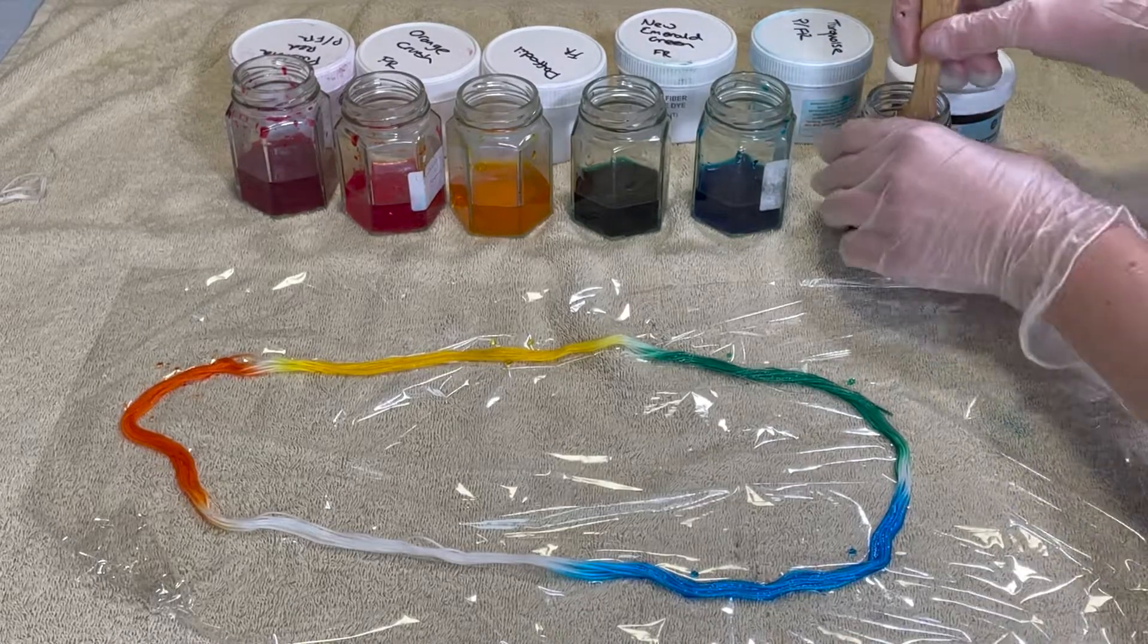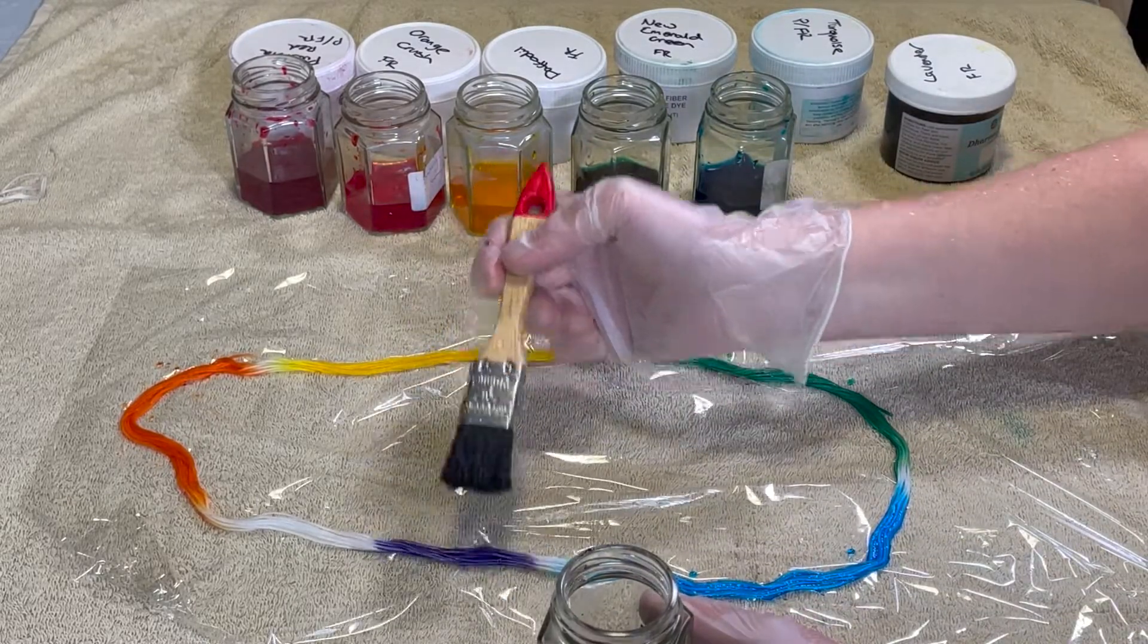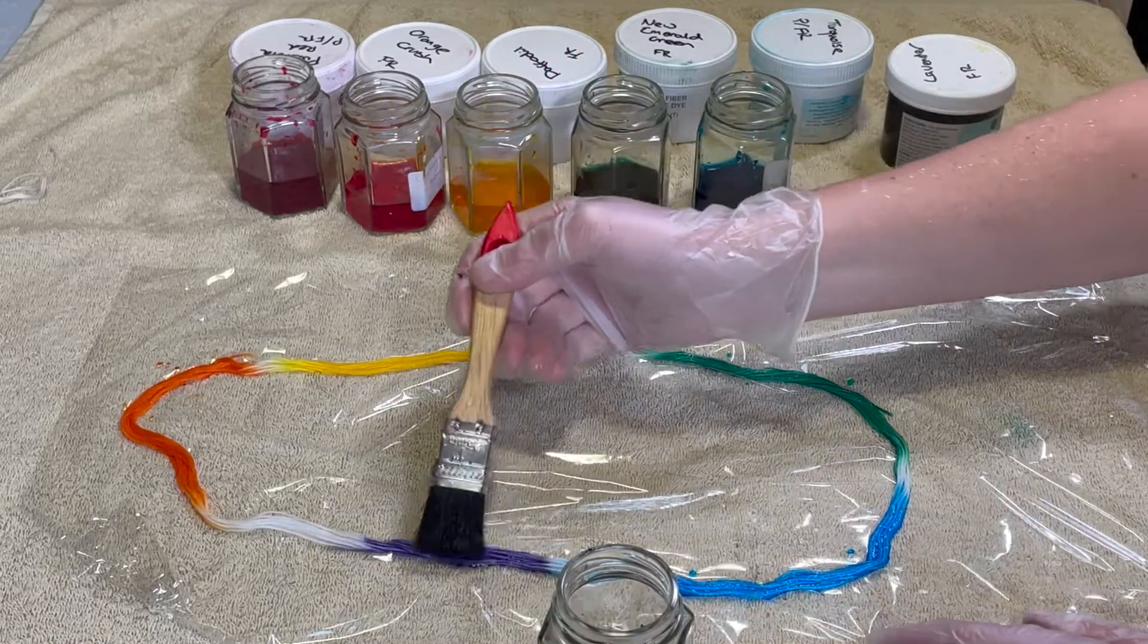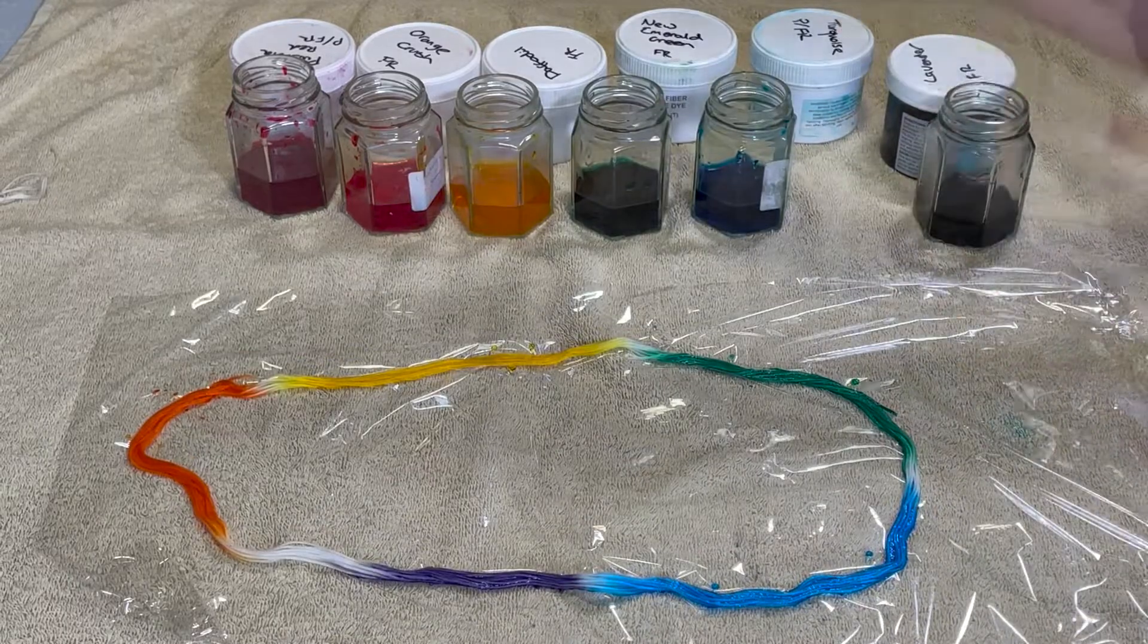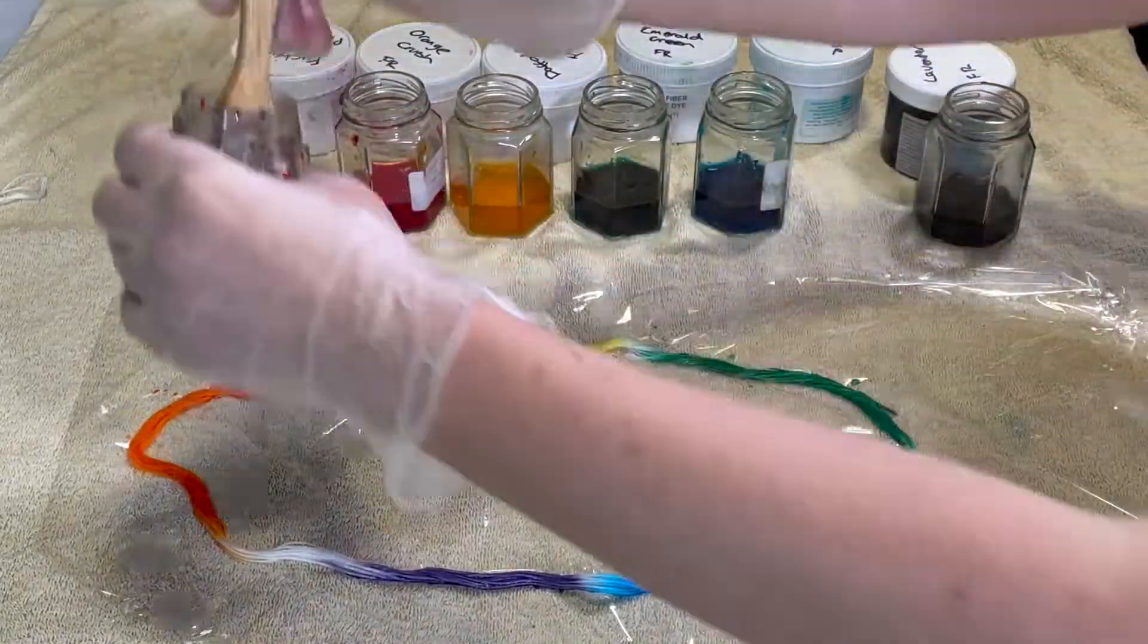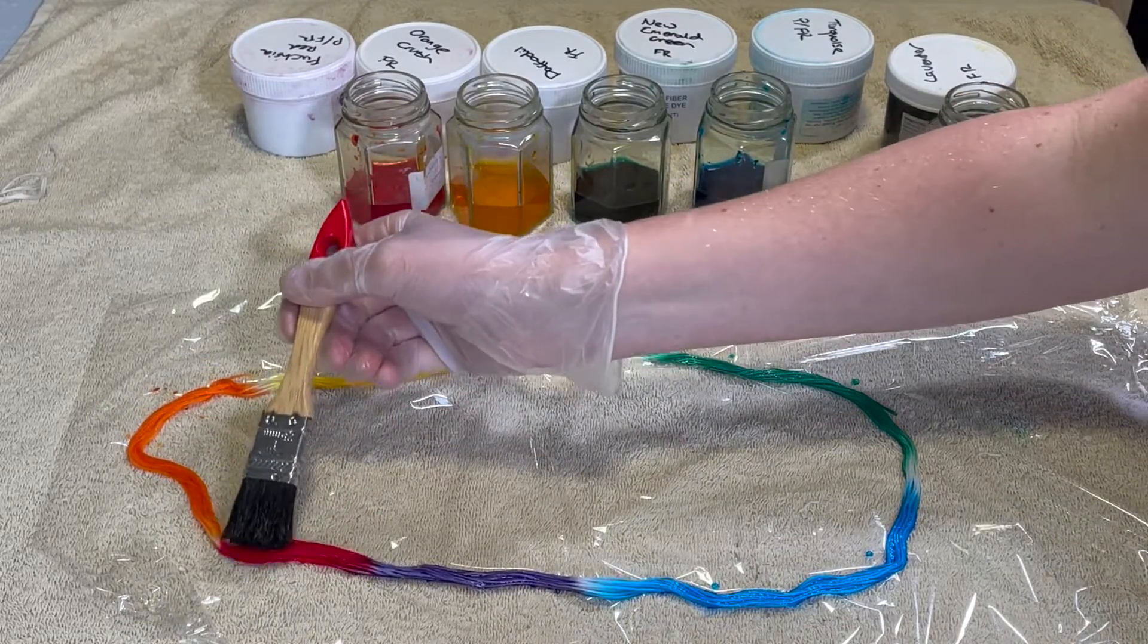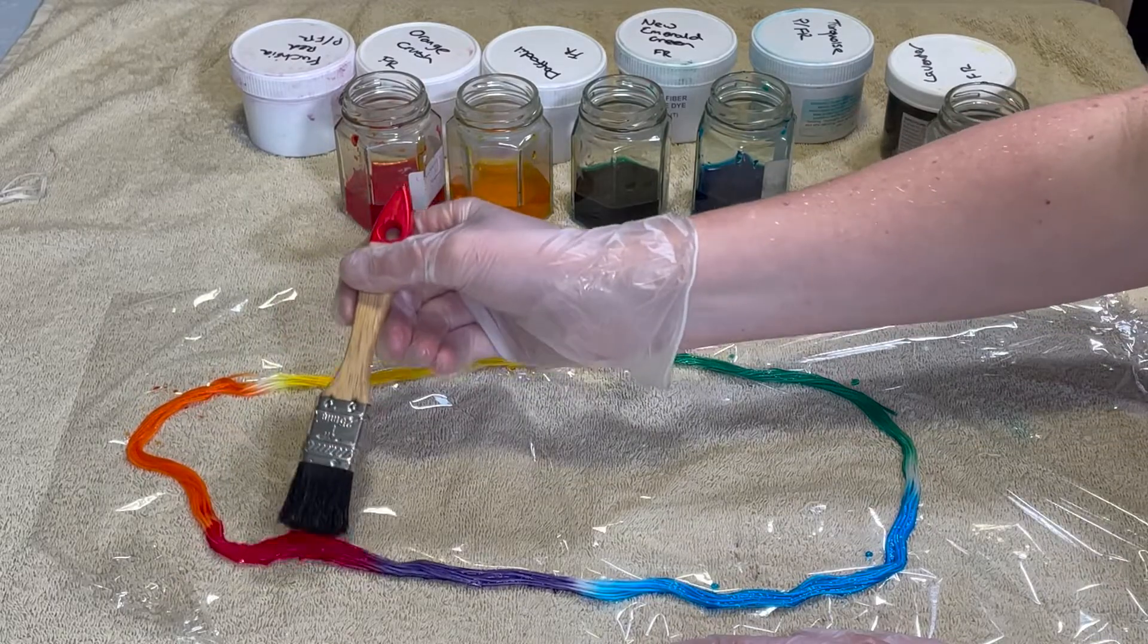Going for the lavender. Oh, that's a beautiful purple. I had to make this small because I made the turquoise quite large, didn't I? And fuchsia red. Oh yeah, that's nice.